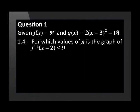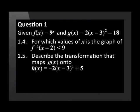For which values of x is the graph of the inverse of f shifted 2 units to the right less than 9? Describe the transformation that maps g(x) onto h(x) is equal to negative 2(x minus 3) squared plus 5.